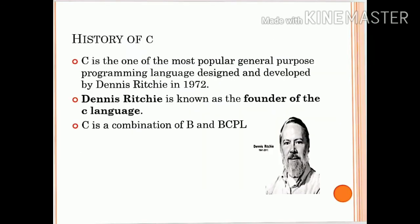C is the combination of B and BCPL. The founder of C language is Dennis Ritchie. C is one of the most popular general purpose programming languages. The C language is not tied to any particular operating system and can be used to develop new operating systems. C is closely associated with the Unix operating system. C programs are very efficient, fast and highly portable — meaning C programs written on one computer can be run on another with little or no modifications.